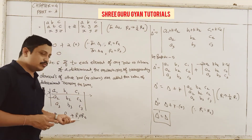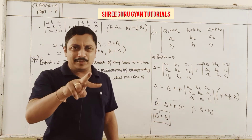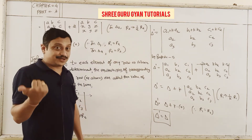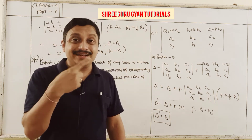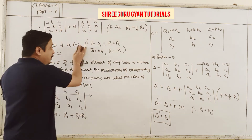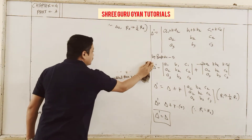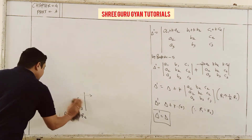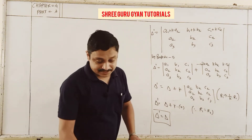This operation can also be done column-wise: first column plus K times second column, or first column plus K times third column, or second column plus K times third column — all give the same determinant value.